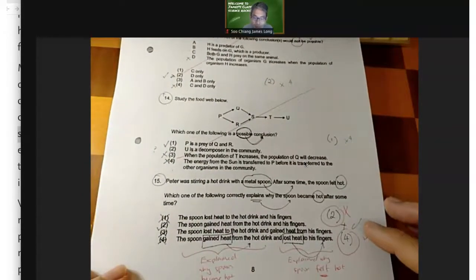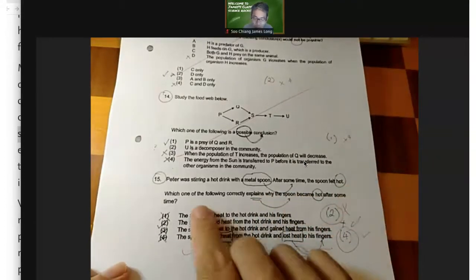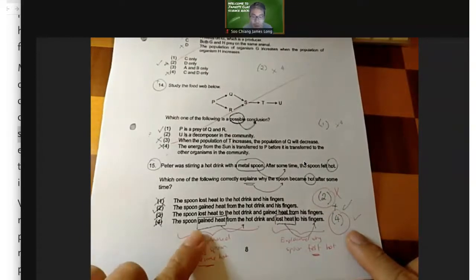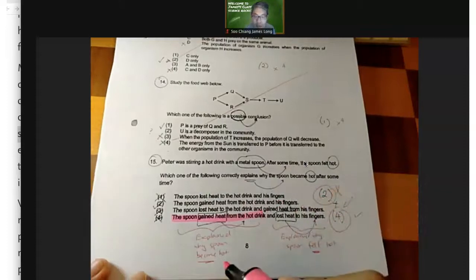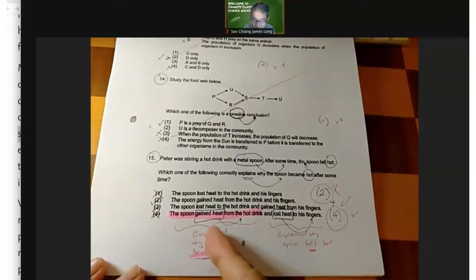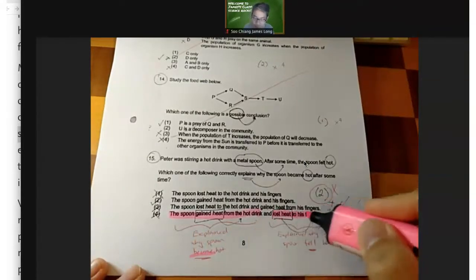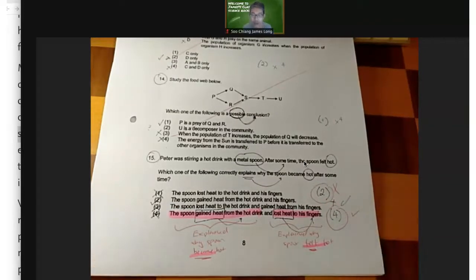Now, Peter was stirring a hot drink with a metal spoon. After some time, the spoon felt hot. Which of the following correctly explains why the spoon became hot after some time? The answer is 4. Why is it 4? Firstly, the spoon gained heat from the hot drink. This part here explains why the spoon became hot. And then, the spoon gained heat from the hot drink and the spoon lost heat to his fingers. So what this part explains is why the spoon felt hot to his fingers. For the fingers to feel hot, heat must have flowed to the fingers. For the fingers to feel cold, like if you're sitting in an air-conditioned room, if you're feeling cold, that's because your body is losing heat to the environment. But if you're sitting under the hot sun, you're getting heat from the environment, so you're feeling hot. So the answer here should be 4.